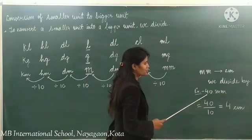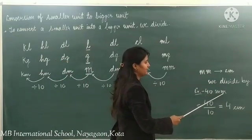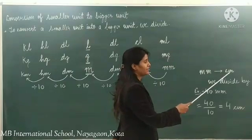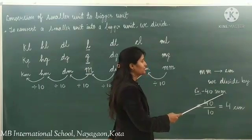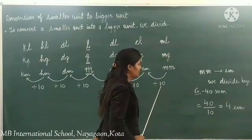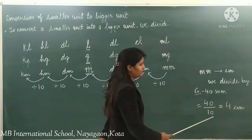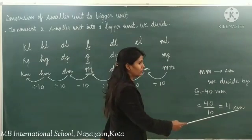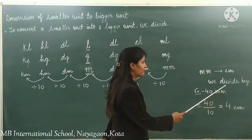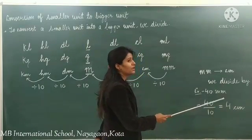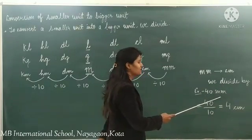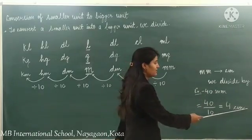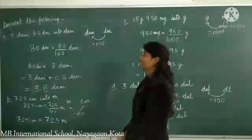Suppose the question is: convert 40 millimeters into centimeters. We divide by 10. When we divide 40 by 10 we get 4 centimeters. So 40 millimeters equals 4 centimeters.